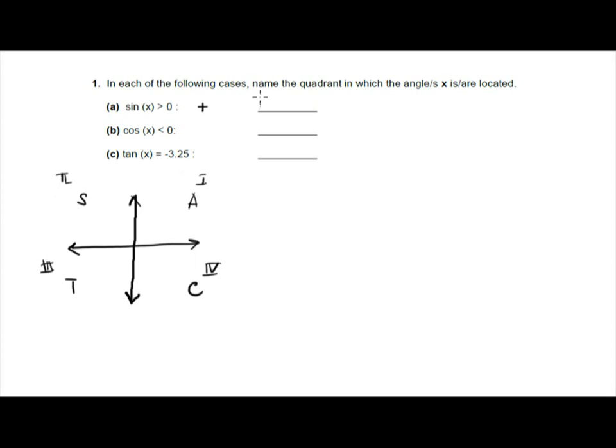For part B, cosine x is less than zero, so this means cosine is negative, and cosine is negative in the second and then the third. So the answer is quadrant two and quadrant three.